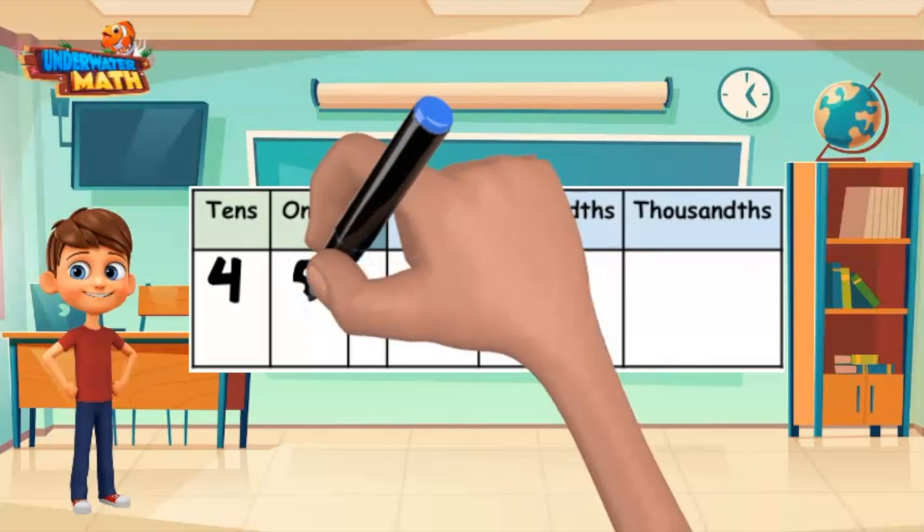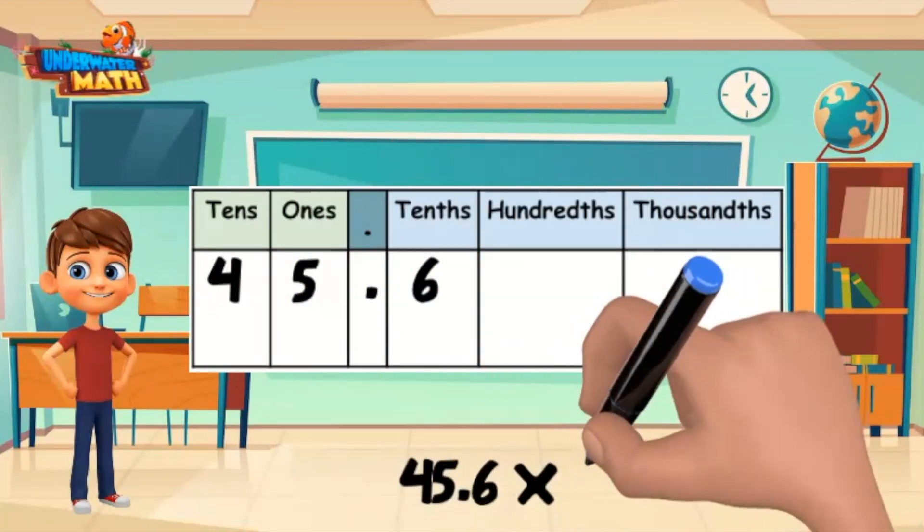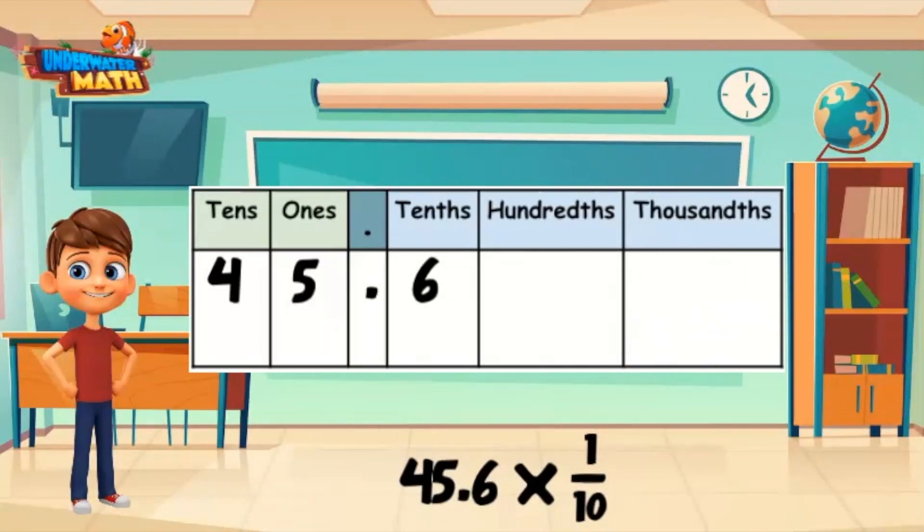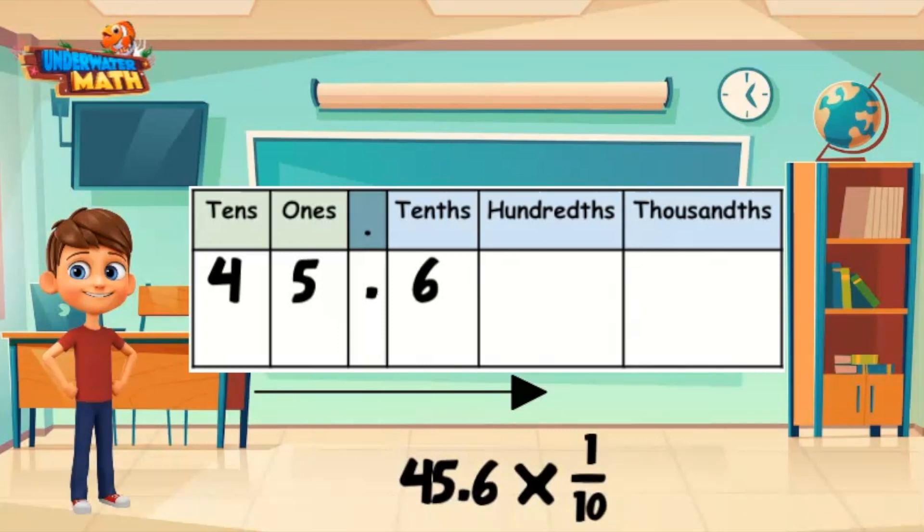I'll put the number 45.6 on the place value chart. If we multiply 45.6 by one-tenth, it means our entire number needs to shift one place value to the right. Remember, multiplying by a fraction makes your number smaller. It's weird, I know, just trust me.